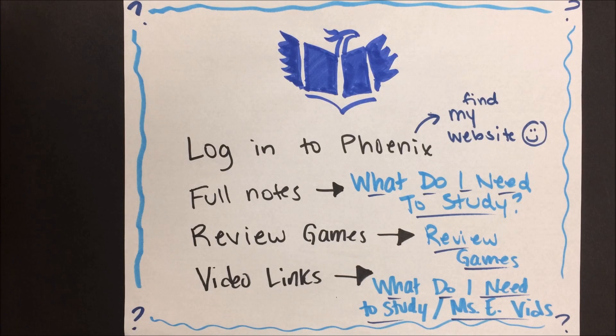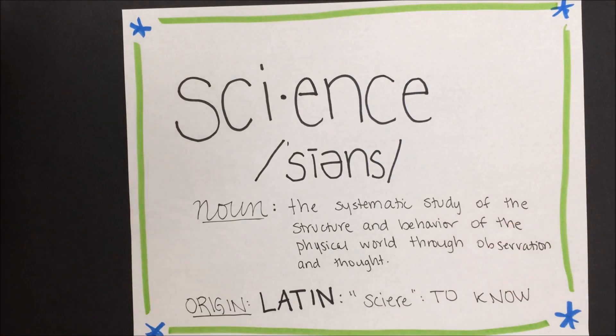So the class that we're taking this year is called life science. Before we can really get started on anything, we need to establish what the words life and science mean. Science comes from a Latin word meaning to know, and that's exactly what scientists try to do. They try to know as much as they can about the world around them. In this class we will be focusing on the study of living things. This brings us to our next question: what does it mean to be alive?